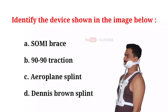Identify the device shown in the image below. A. Somi brace. B. 90-90 traction. C. Aeroplane splint. D. Dennis Brown splint. And the correct answer is A. Somi brace.